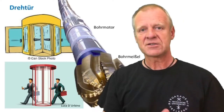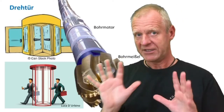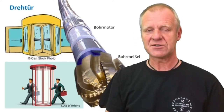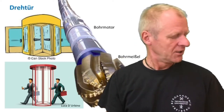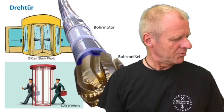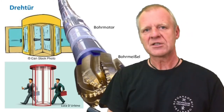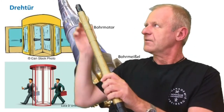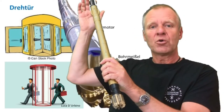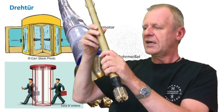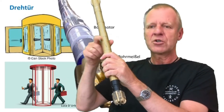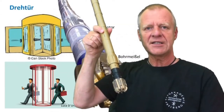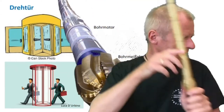works like a supermarket revolving door. The revolving door rotates faster if more people pass through it. With the downhole motor, this is similar — we pump drilling mud from above, and the more drilling fluid that passes through, the faster the bit turns.